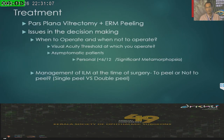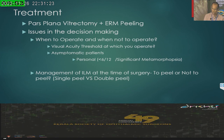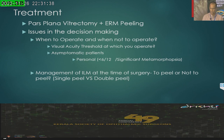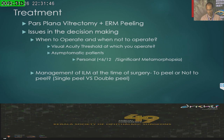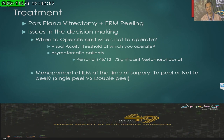Regarding treatment, there is no confusion — it is pars plana vitrectomy plus peeling of the epiretinal membrane. Three key issues in decision-making: when to operate, when not to operate, and the visual acuity threshold. Personally, I have a visual threshold of about 6/12 — I don't operate when vision is better than 6/12, though that can vary. Significant metamorphopsia is another probable indication. The second important issue is how to manage the ILM at the time of surgery — whether to peel the ILM along with the ERM (double peel) or peel only the ERM (single peel).